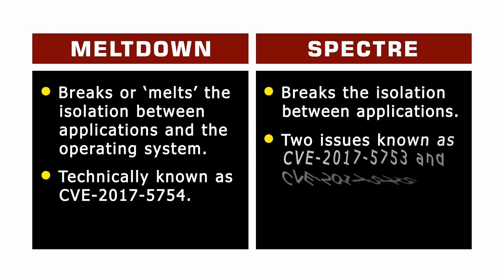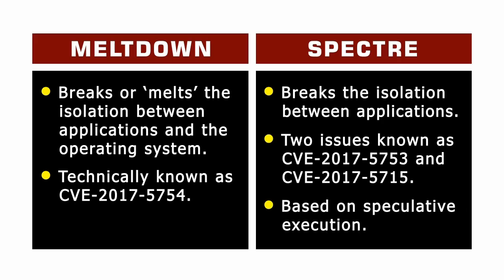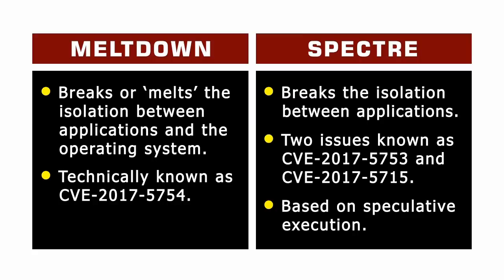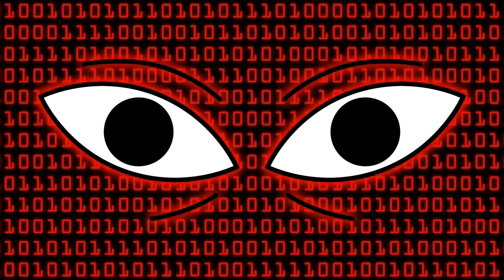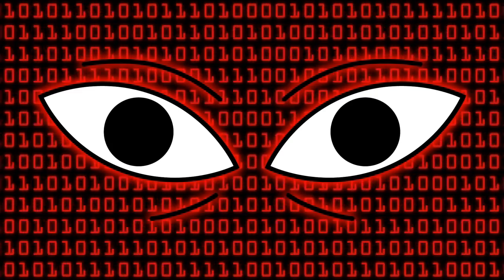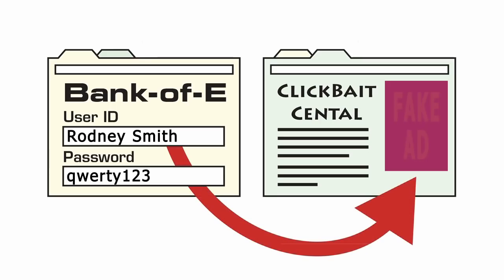Spectre refers to two different vulnerabilities, both of which take advantage of a feature of modern processors called speculative execution — where a processor anticipates and performs likely future work to improve performance. The Spectre vulnerabilities trick programs into using speculative execution to leak information. In practice, this means malware applications may be able to steal sensitive data, such as credit card details or usernames and passwords entered into a web page, accessed by malicious JavaScript hidden in an online advert on another page.